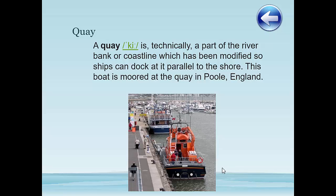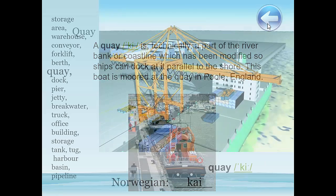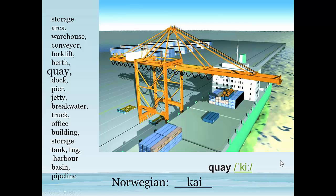A quay technically is part of a riverbank or coastline. It's been modified either with concrete or steel or wood so that ships could dock parallel to the shore to unload passengers or cargo or just to park their vessels. This is a boat moored at a quay — so a modified shoreline or coastline is a quay. You would have several berths at a quay — the berths will be numbered, basically your parking spots on the quay.